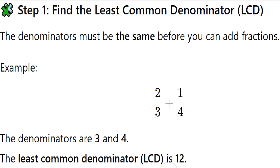Step 1: Find the least common denominator, LCD. The denominators must be the same before you can add fractions. For example, 2 thirds plus 1 quarter — the denominators are 3 and 4. The least common denominator, LCD, is 12.